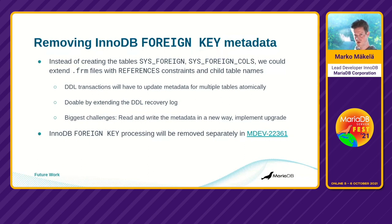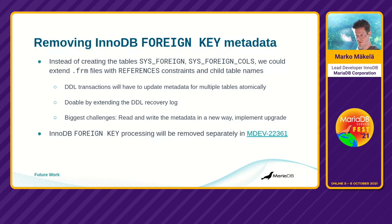Looking at what is still left to do: one thing is that foreign key metadata needs to be stored outside of storage engines. Instead of InnoDB internal tables SYS_FOREIGN and SYS_FOREIGN_COLS, that metadata should be stored in the SQL layer — for example in .frm files. This means storing not only the referenced constraints but also child table names, and updating metadata for multiple tables atomically. That could be done by extending the DDL recovery log file.